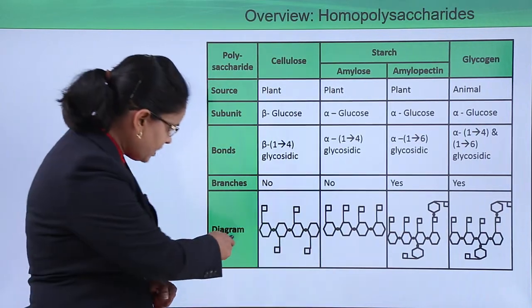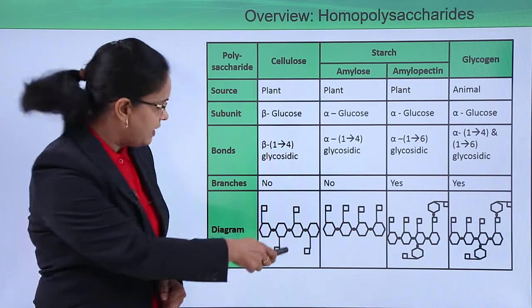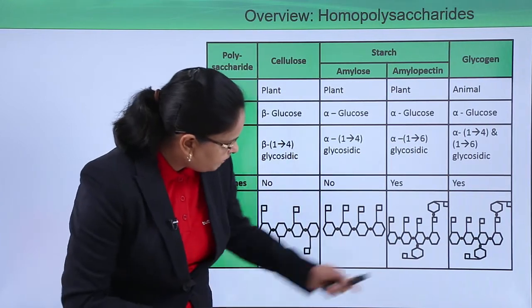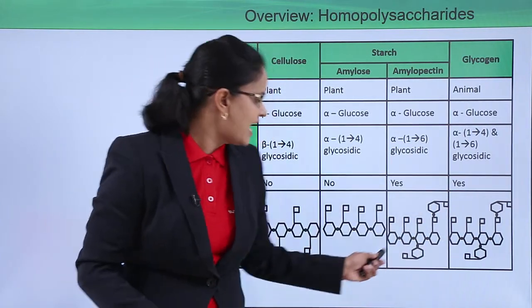Let us now have a look at the diagram. This is the diagram—you can see glucose units joined linearly in case of amylose. Also glucose units joined linearly, but see amylopectin, there you can see branches. Similarly in glycogen, we can see branches.